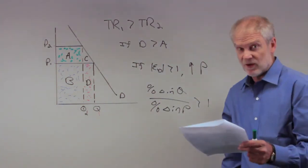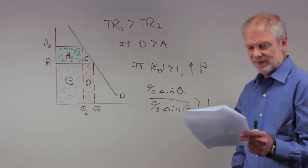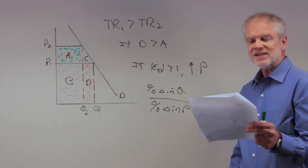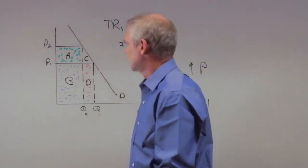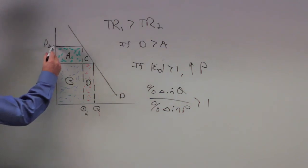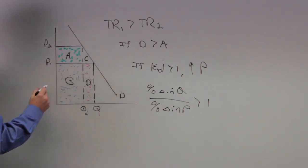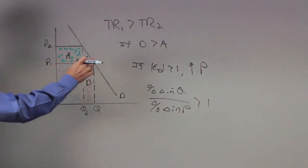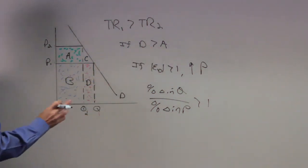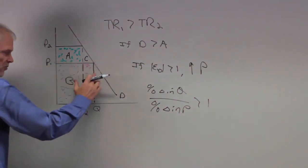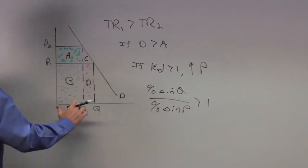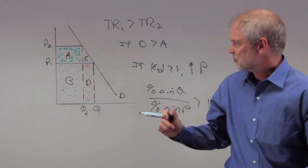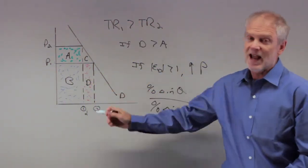Nice question, nice answer A. Let's go to B: a decrease in price from P2 to P1 will cause an increase in total revenue. When I decrease price from P2 to P1, total revenue A is lost, D is gained. We know D is greater than A, therefore total revenue 1 has to exceed total revenue 2. So B is also correct. When you decrease price and demand is elastic, you're going to actually increase revenues.